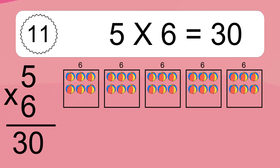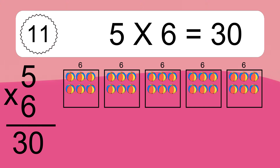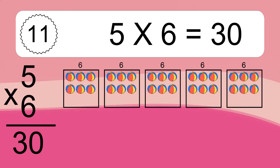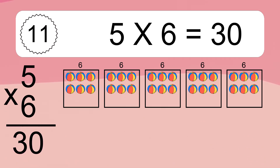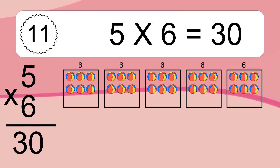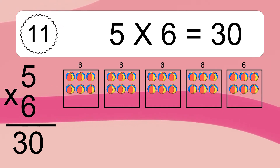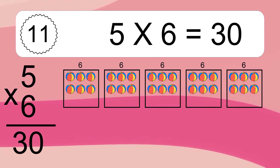5 times 6 equals what? We have 5 boxes, and each box has 6 colorful balls inside. If you count all the balls in all the boxes together, you will have 5 times 6 balls. This equals 30 balls.